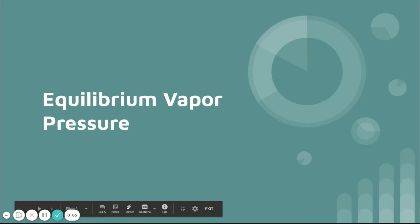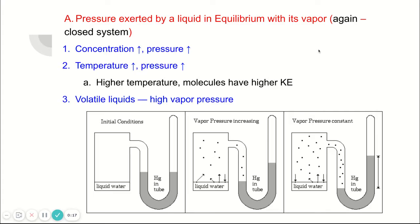Equilibrium vapor pressure. We've already learned about how equilibrium means that a forward and reverse reactions are happening at the same rate - they're finding an equilibrium. Now we're going to talk about how pressure affects that.